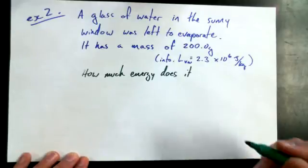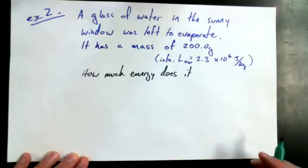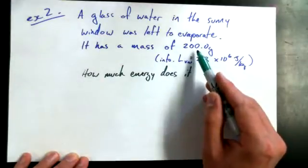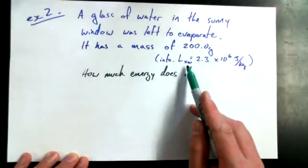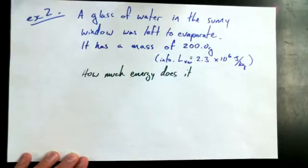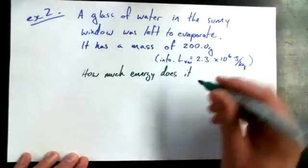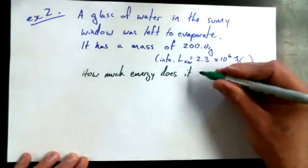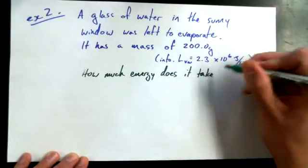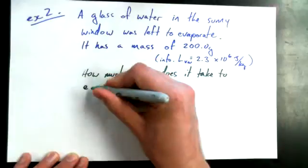I should frame this question. You've got a glass of water in a sunny window, and it's left to evaporate. It has a mass of 200 grams, and the latent heat of vaporization constant for water is 2.3 times 10 to the power of 6 joules per kilogram. And I want to know how much energy does it take to evaporate the glass of water?